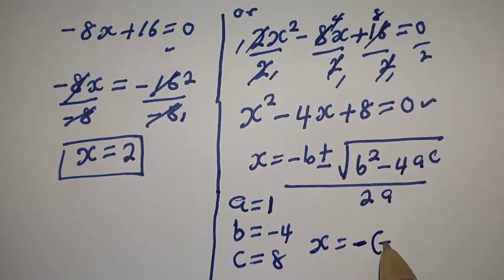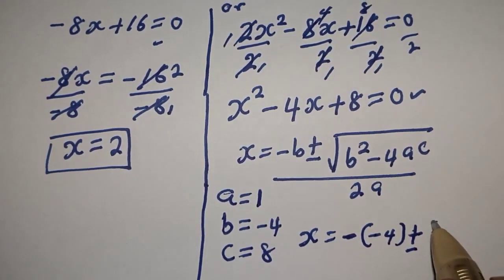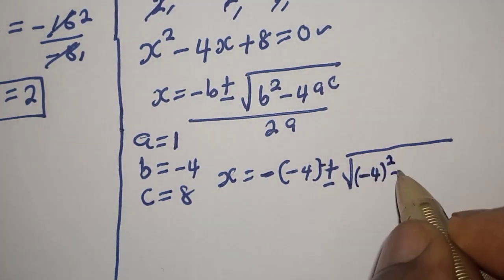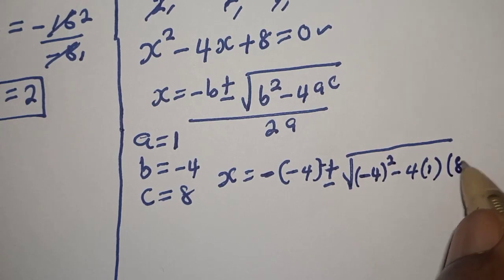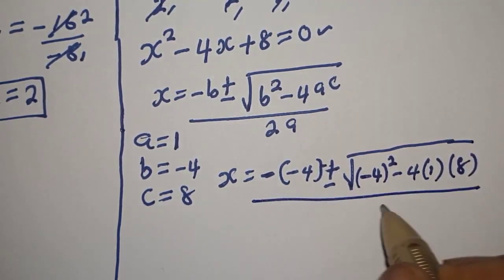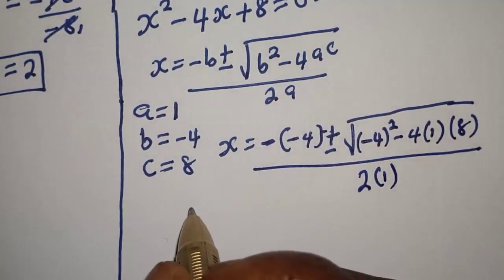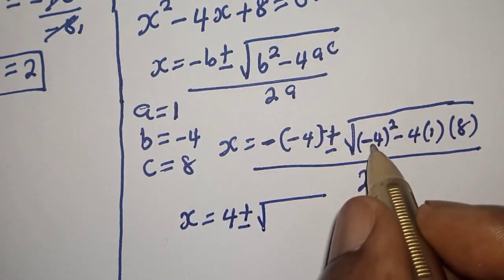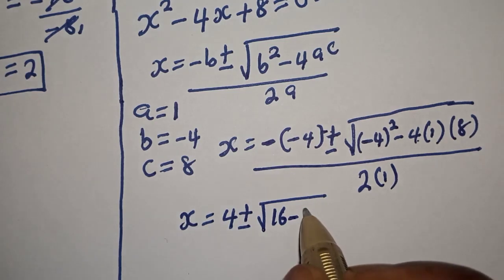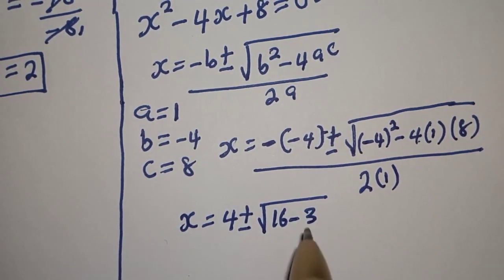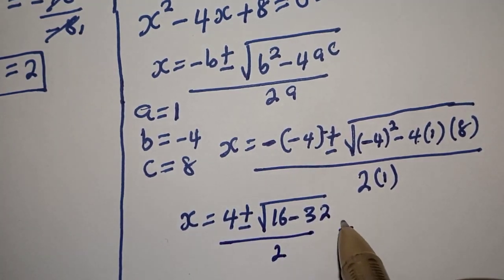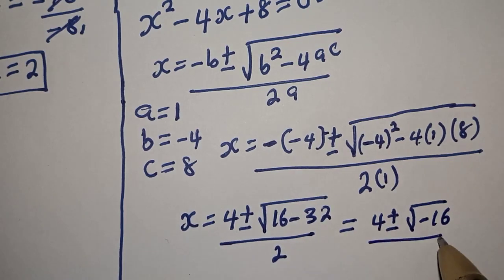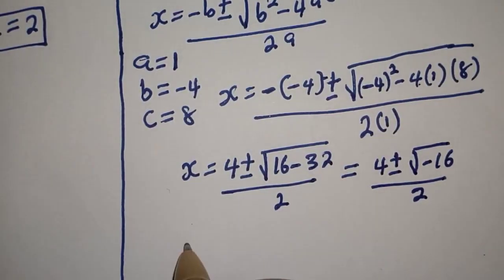Substituting: s equals negative of minus 4, plus or minus the square root of minus 4 squared minus 4 times 1 times 8, over 2 times 1. That gives s equals 4 plus or minus the square root of 16 minus 32, over 2, which equals 4 plus or minus the square root of minus 16, over 2.